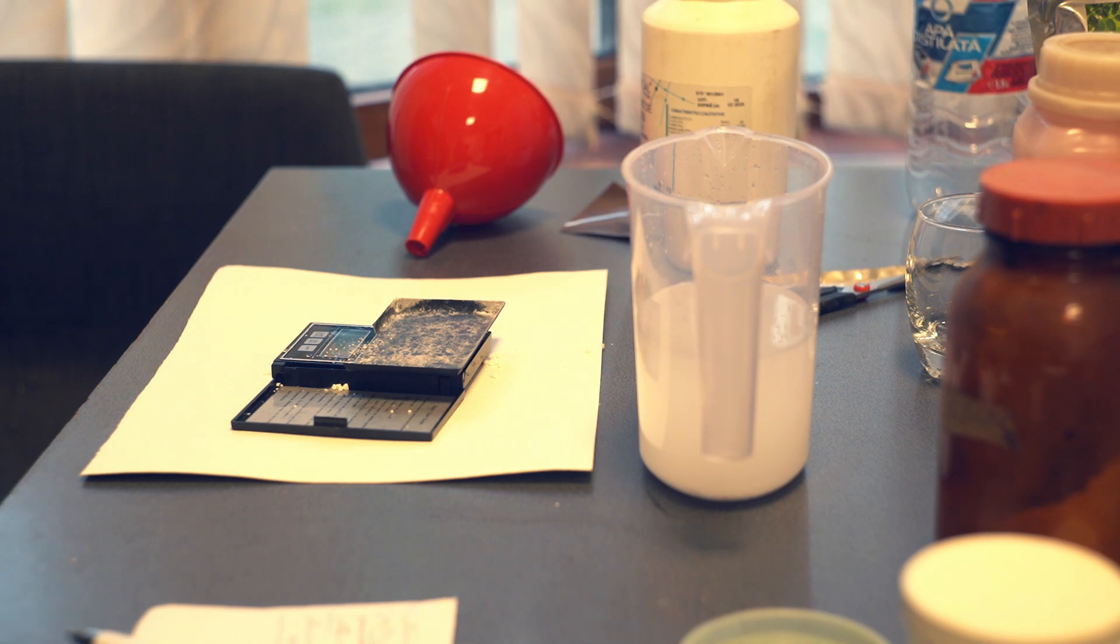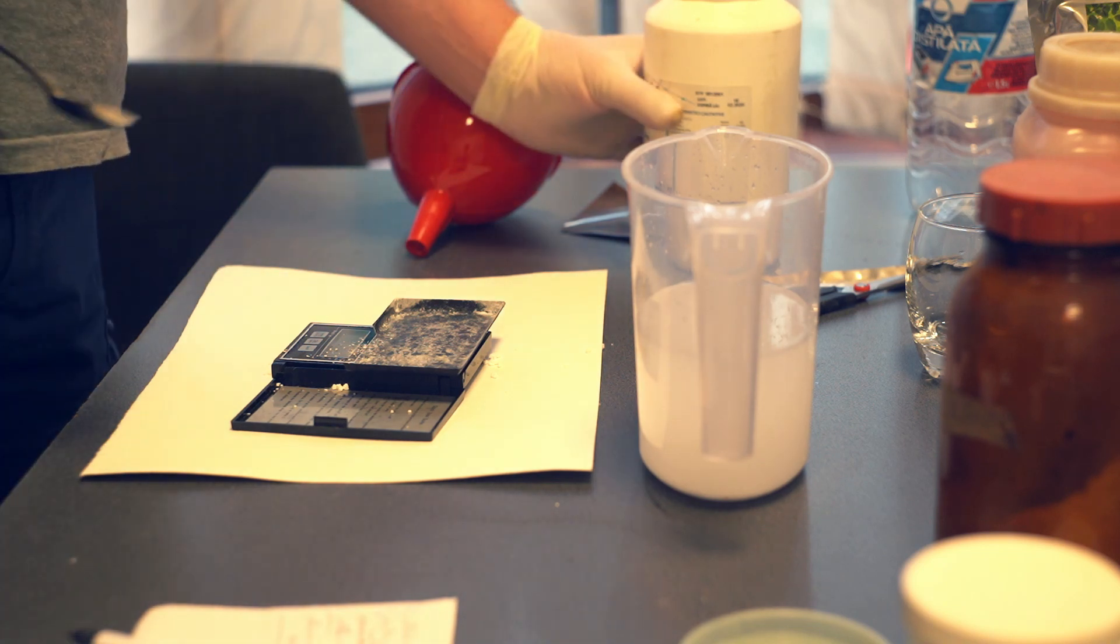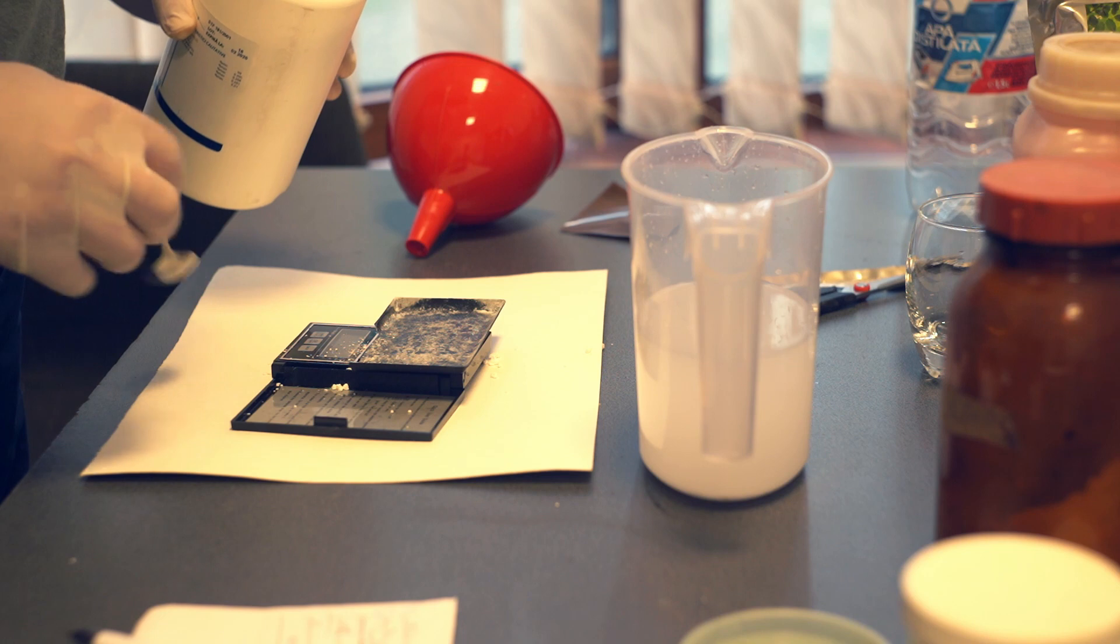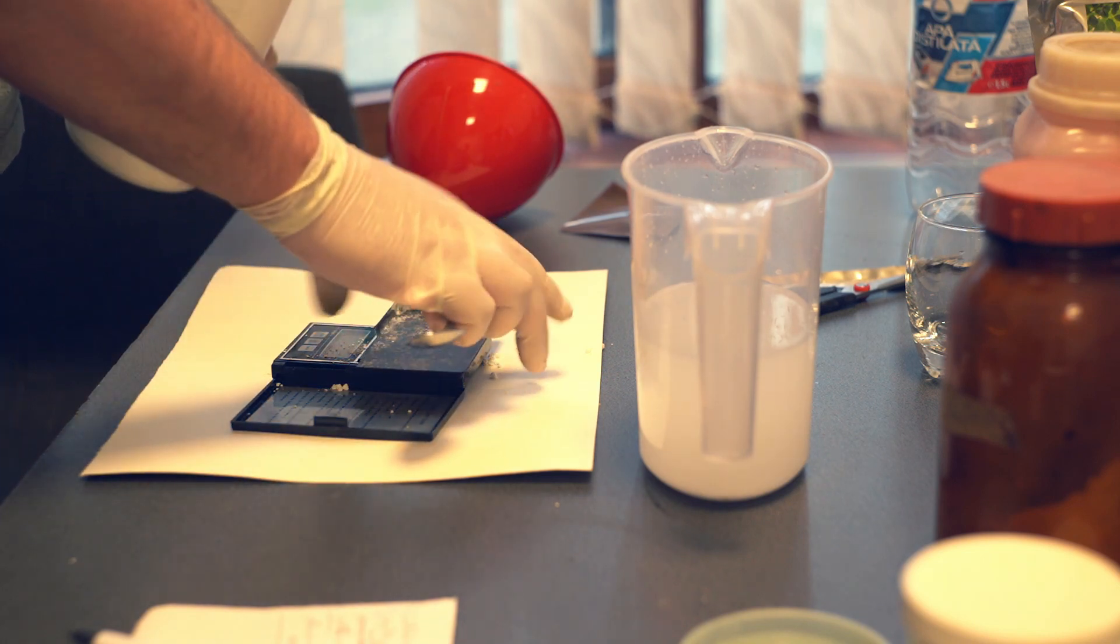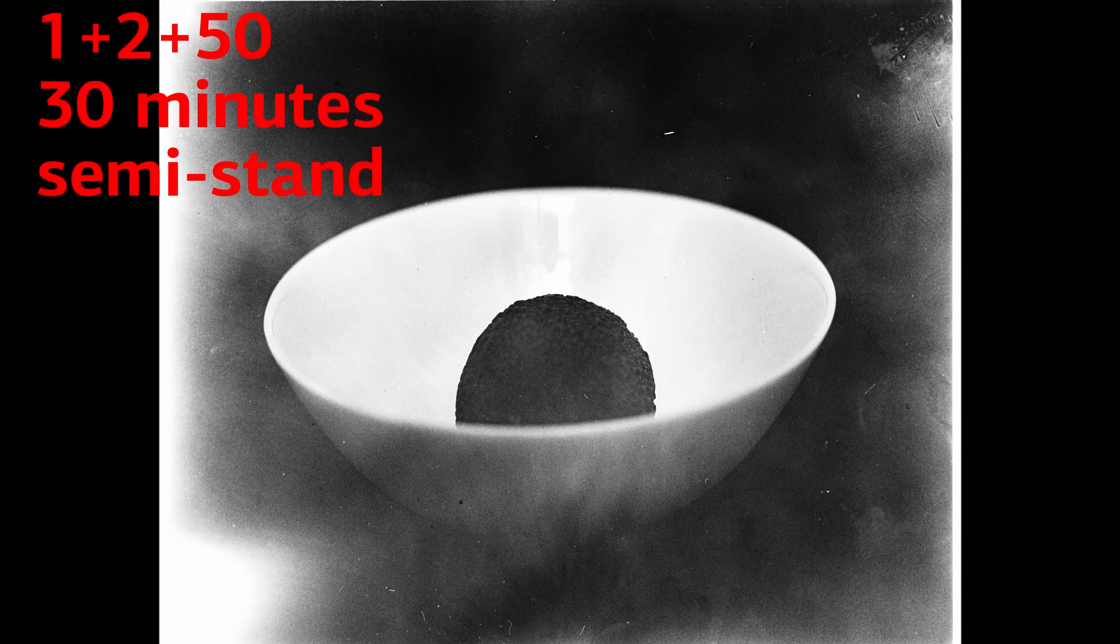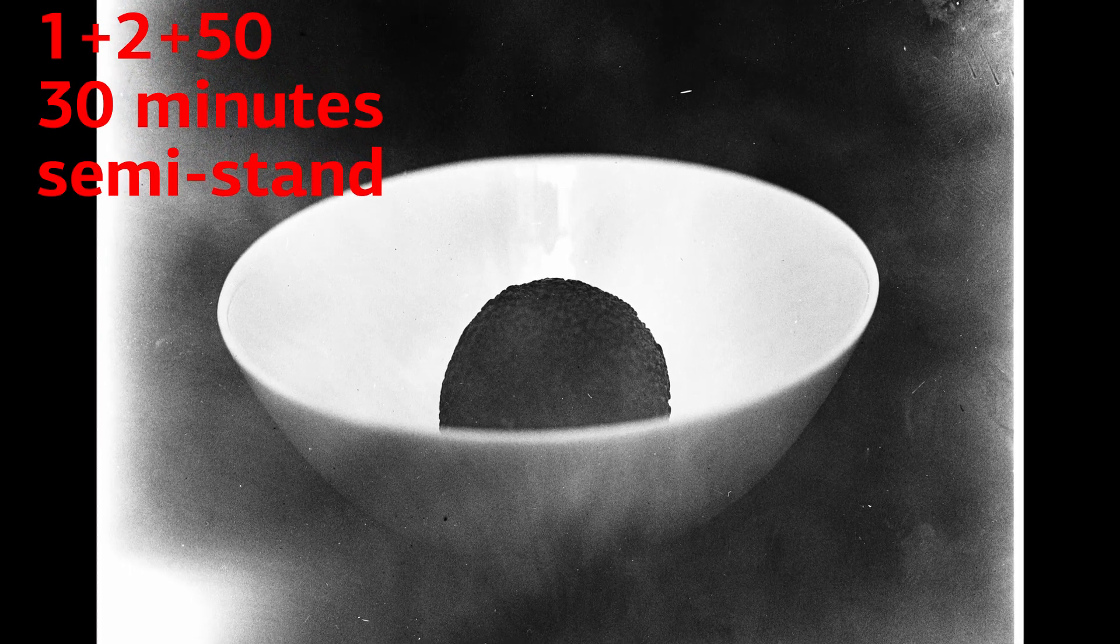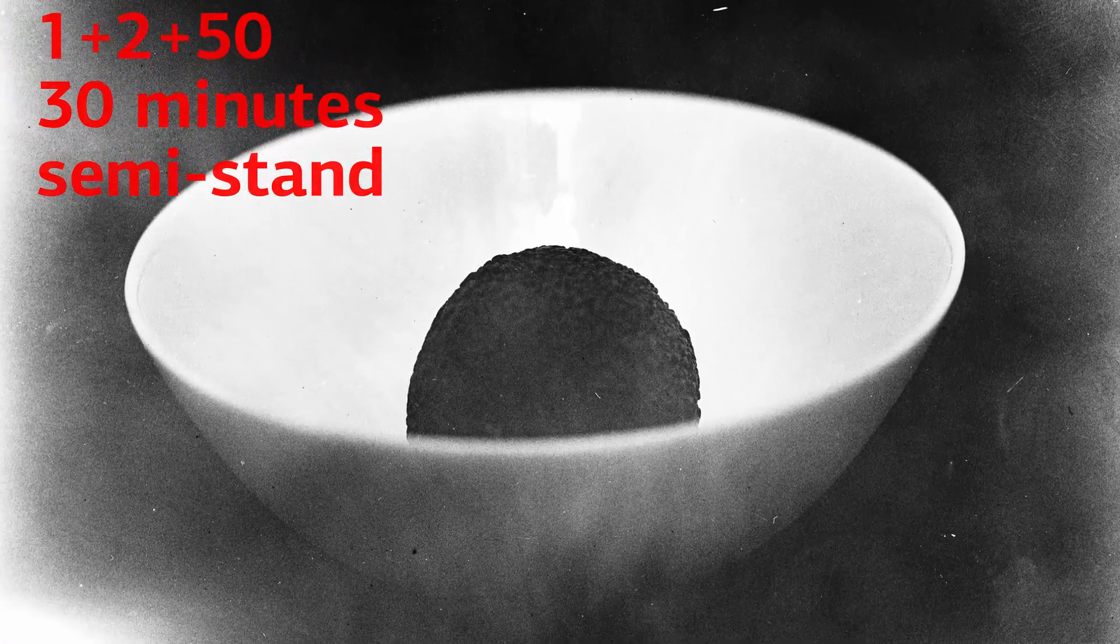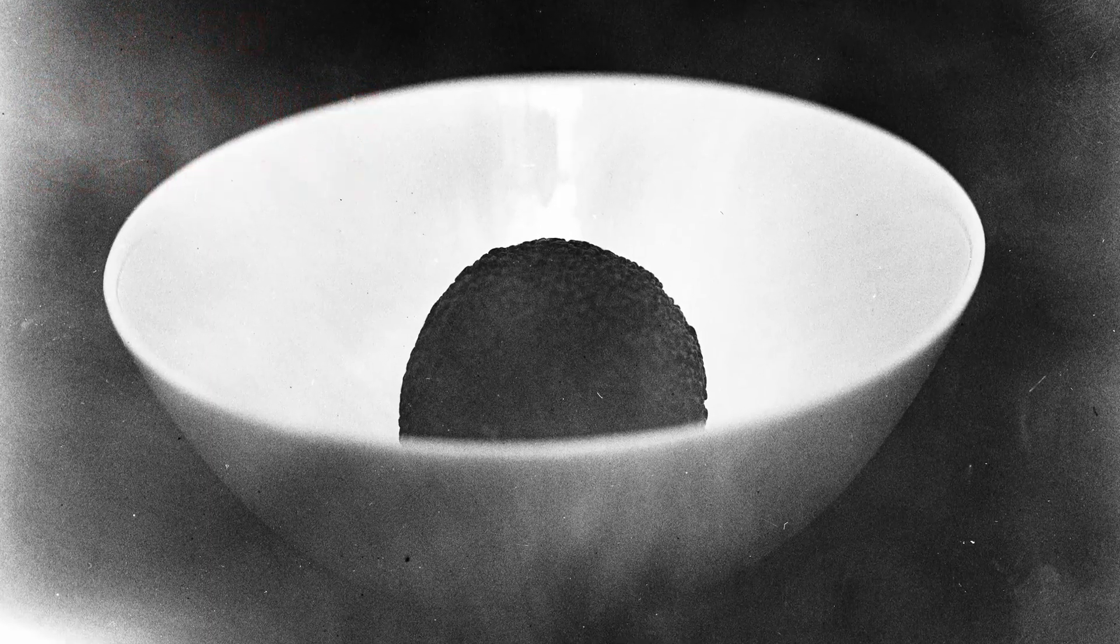I left both containers overnight and the next day I start tweaking the working developer. I start with the recommended dilution: one part solution A, one part solution B, and 100 parts water. Film was stand developed for 30 minutes. The result was garbage, I didn't scan it. Next, one part solution A, two parts solution B, 50 parts water. Semi-stand development. Here it is, Tmax 400.